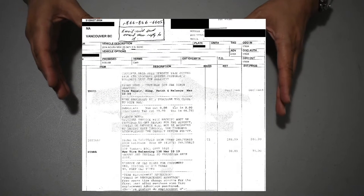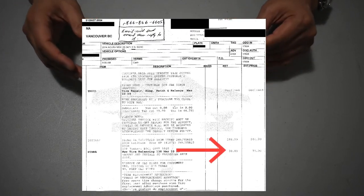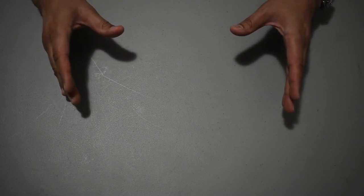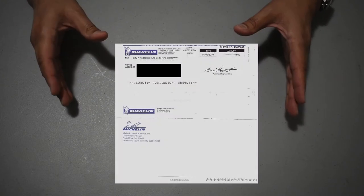As you can tell from the receipt, there was a cost to mount and balance the tire, as well as a disposal fee that Canadian Tire charged me. That was not part of the 40% reimbursement.